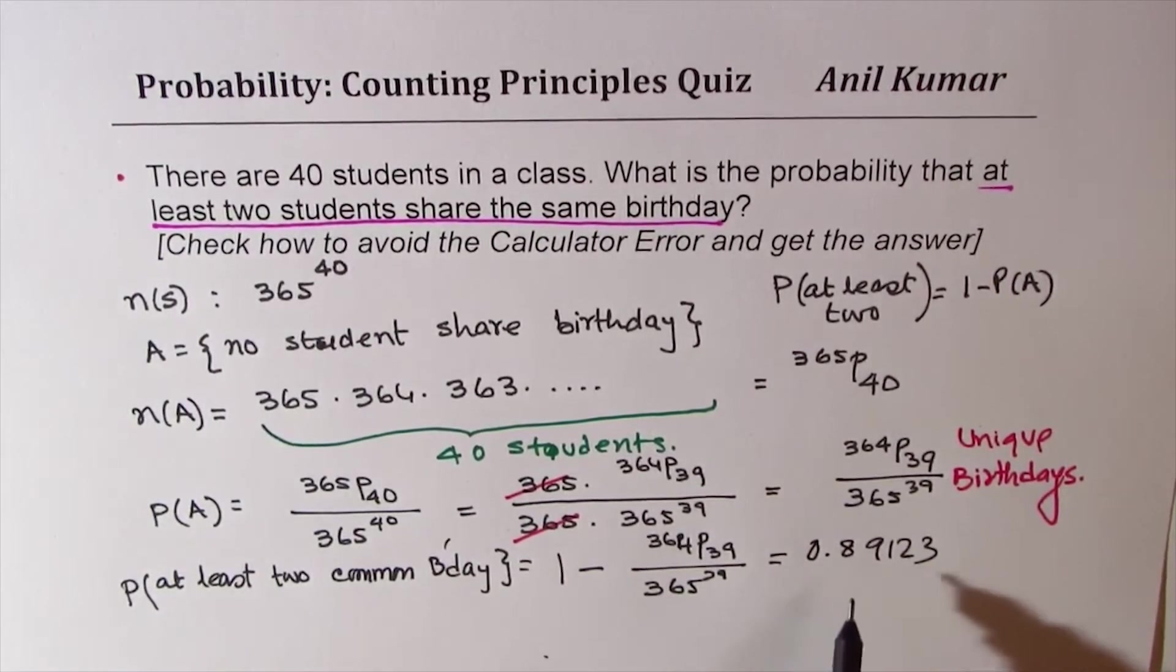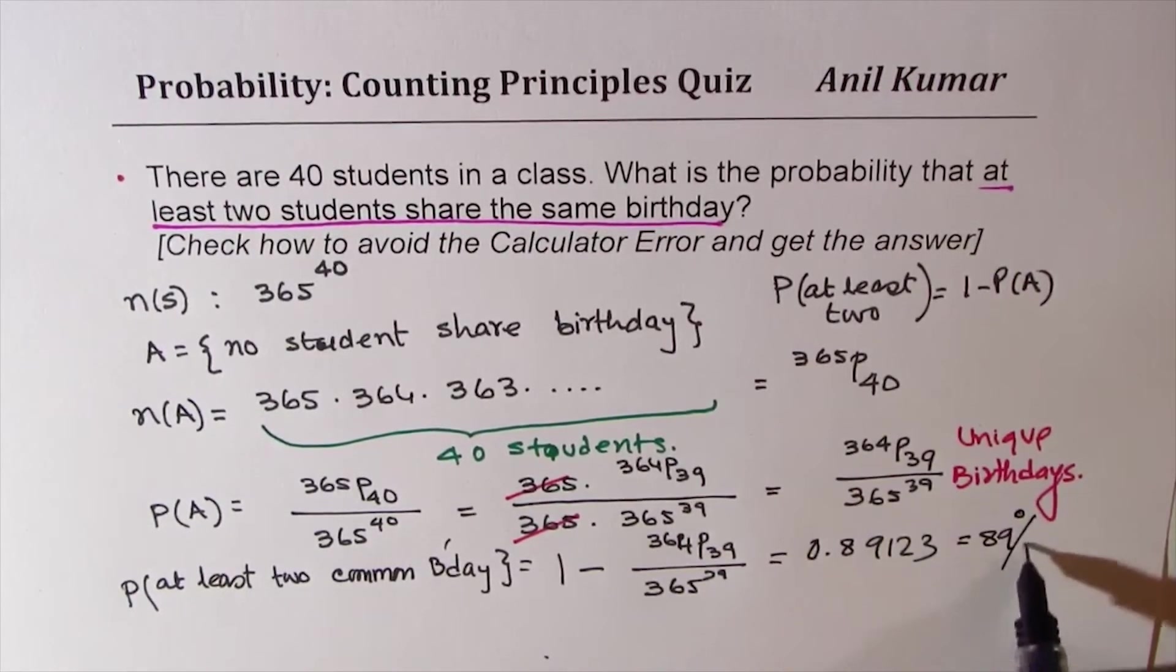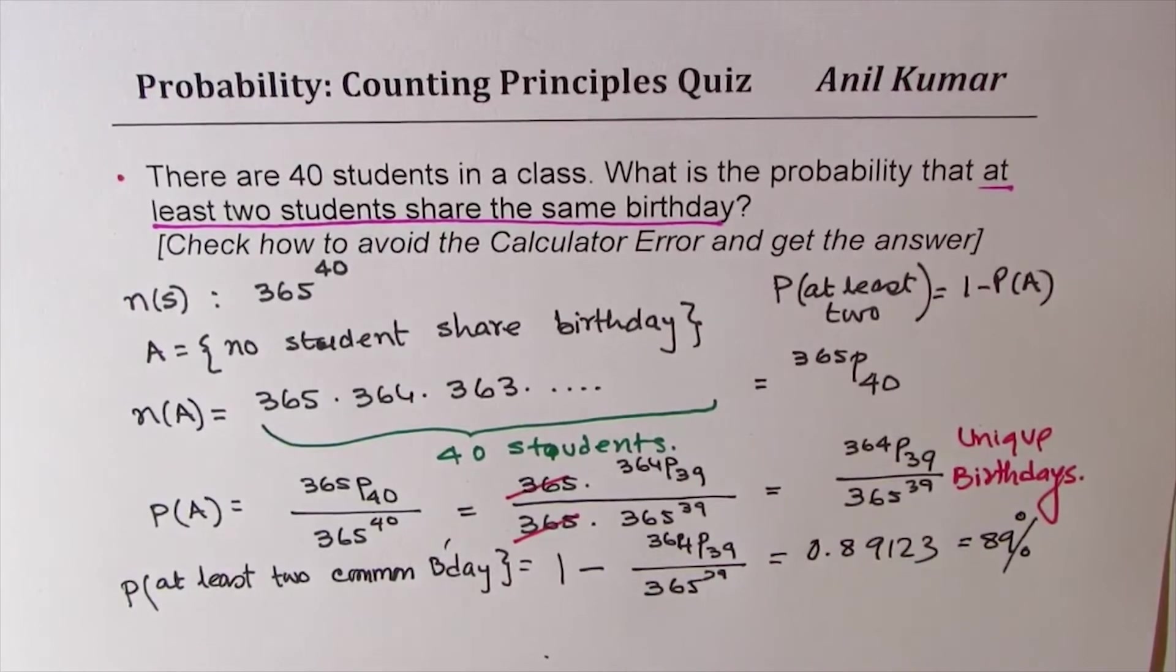Which is almost 89%, so 89%. It's very highly likely, almost 90% chances that in a class of 40 students two will have birthdays on the same day, at least. There could be more number of days where students may share their birthday. So I hope you understand and appreciate from where it is coming.